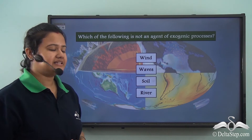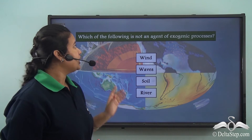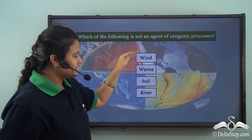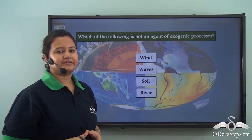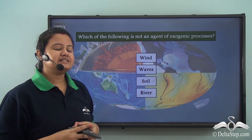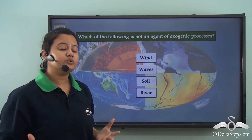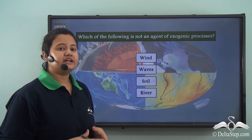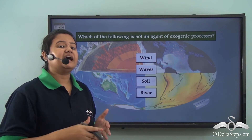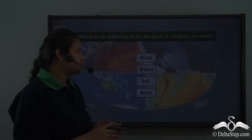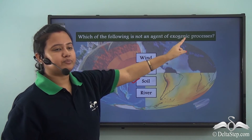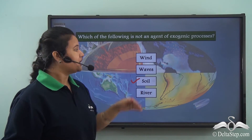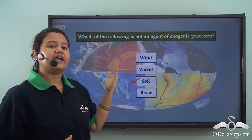Before proceeding, let's answer this question: which of the following is not an agent of exogenic processes — wind, waves, soil, or river? As discussed previously, exogenic processes include the action of wind, waves, rivers, and glaciers. But soil does not cause any type of action on the earth's surface that leads to the formation of landforms. So soil is not an agent of exogenic processes; the correct answer is soil, while the rest are all agents of exogenic processes.